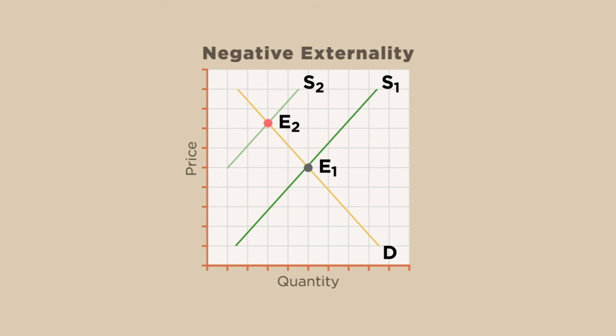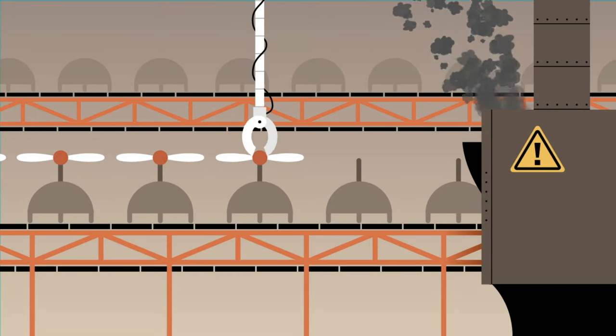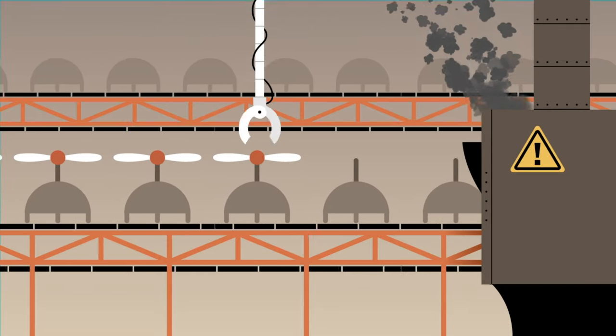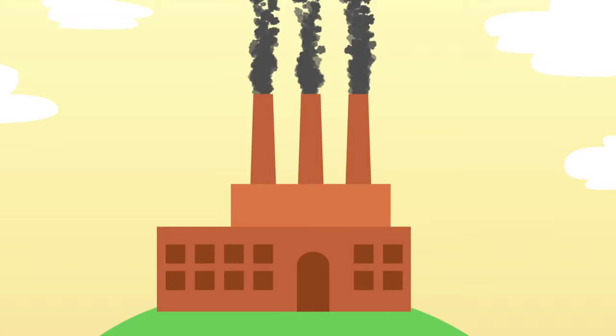And because the firm isn't paying the full cost of producing widgets, the price charged for widgets is artificially low. Consumers will buy more widgets at the artificially low price than at a price that reflects their full production cost. So ultimately, more widgets are produced than would be the case if all the costs were included. And since more widgets are being produced, more air is being polluted.